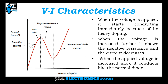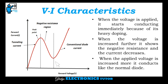This is the VI characteristics. When the voltage is applied, it starts conducting immediately because of its heavy doping. When the voltage is increased further, it shows negative resistance and the current decreases. When the applied voltage is increased even more, it conducts like the normal diode.